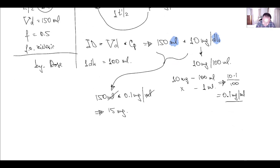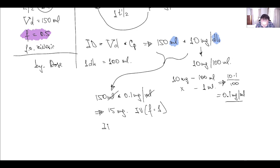But looking back at the problem, bioavailability is 0.5. The 15 milligrams would be the dose for IV infusion where bioavailability equals 1 or 100%. The ingested dose corrected for bioavailability equals the IV dose divided by the bioavailability fraction: 15 divided by 0.5, which equals 30 milligrams.